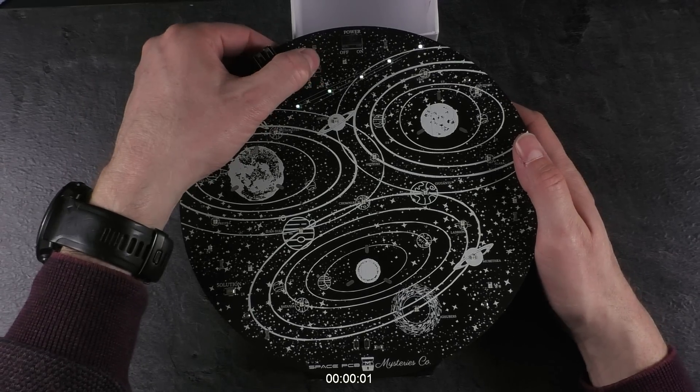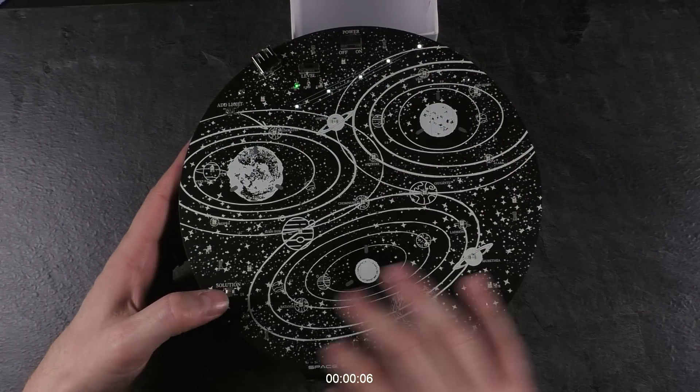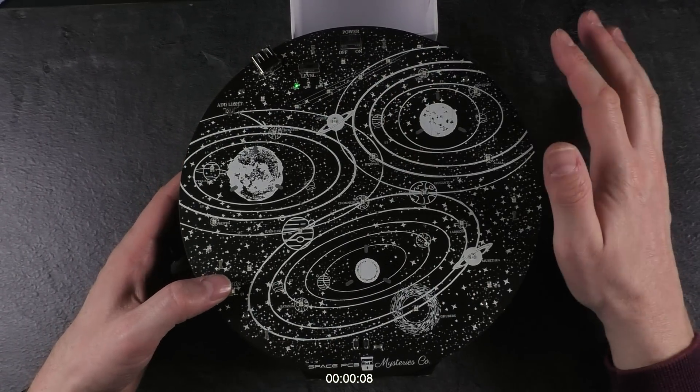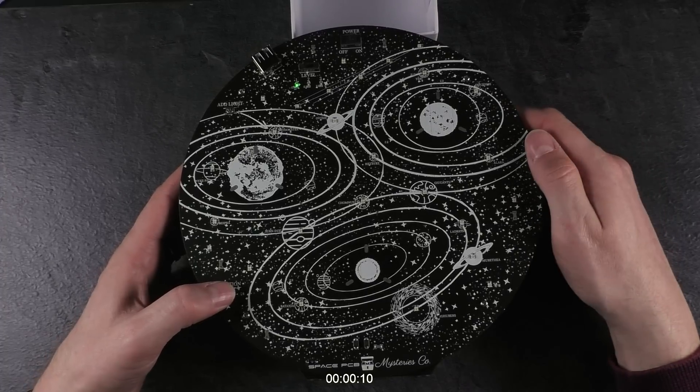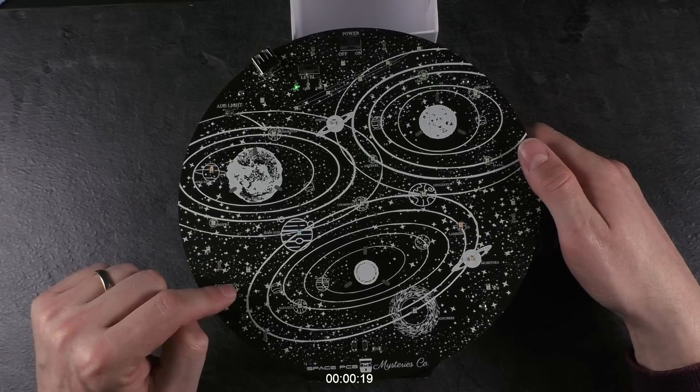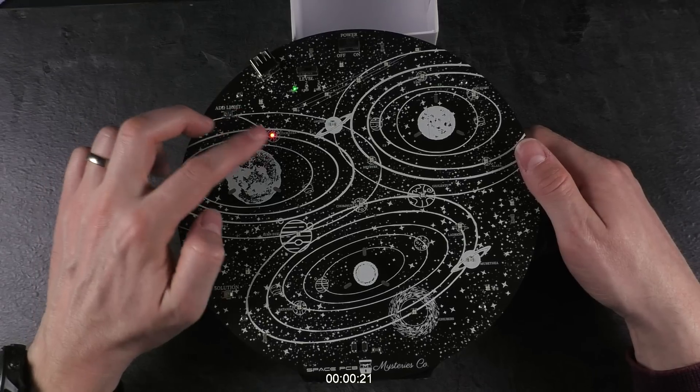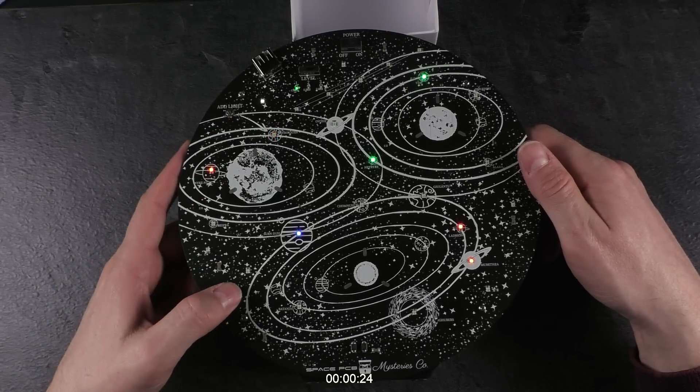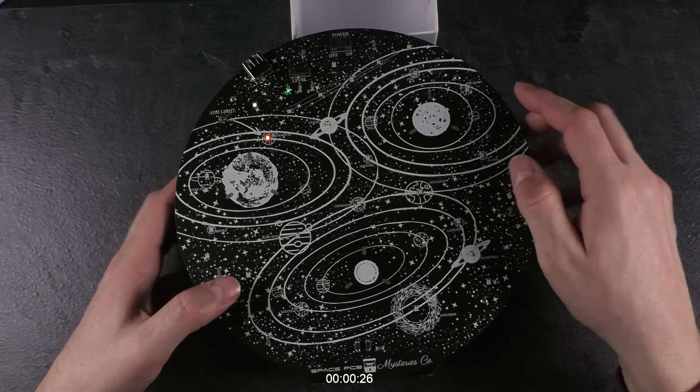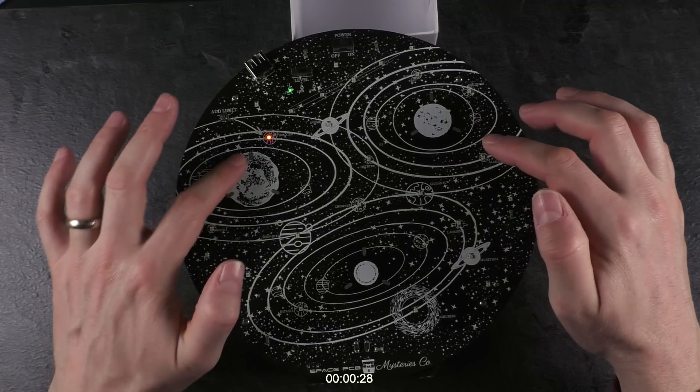So level one. All these bling bling light effects you see around here, they don't matter. What matters are only these lights here. This is the solution. And I now can add lights over here. A red light which needs in the end to be here, here and here. So what I do now is I rotate this here downwards.